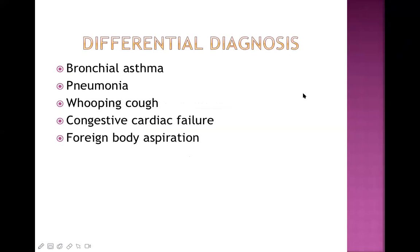Regarding differential diagnosis: bronchial asthma is important but typically presents in older babies with recurrent episodes of hyper-responsiveness — the mechanism is completely different. Pneumonia shares many features: both have tachypnea, respiratory distress, fever, and cough, making differentiation challenging. Clues: bacterial pneumonia causes high-grade fever, chest X-ray shows patchy infiltration/consolidation, and CBC shows neutrophilia, whereas viral bronchiolitis shows lymphocytosis.